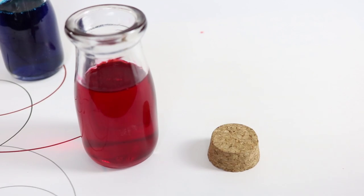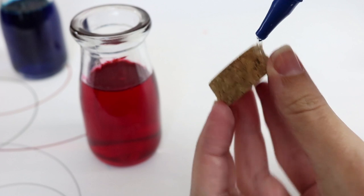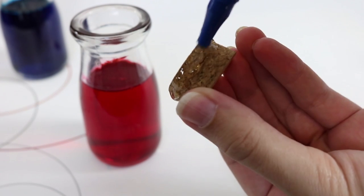The last step is to take your extra strength glue and spread a layer on the bottom edge of the cork. I prefer this gel glue, but super glue will work just the same.